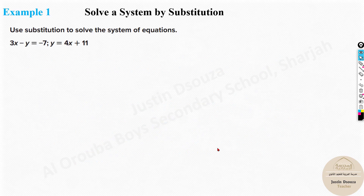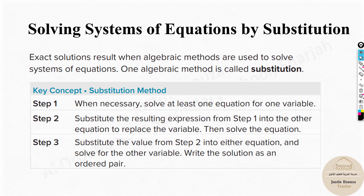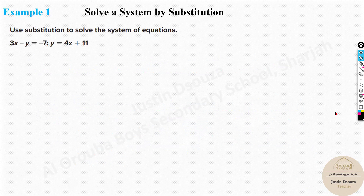Now for the concept of solving systems of equations by substitution: first and foremost, you must understand which is the easier equation to substitute into the other. Once you identify whichever equation has a coefficient of one or is otherwise simpler, substitute it into the other equation and then solve. We will now look at a problem so you can understand what these steps mean very easily.